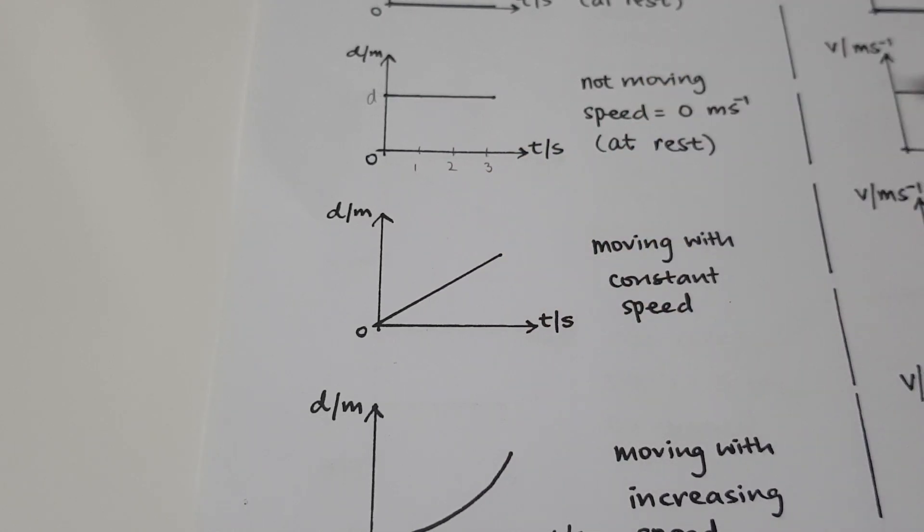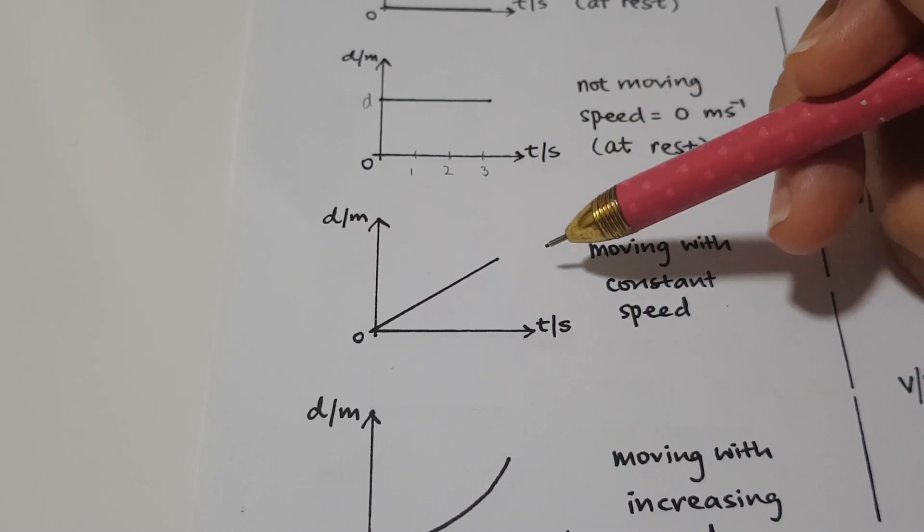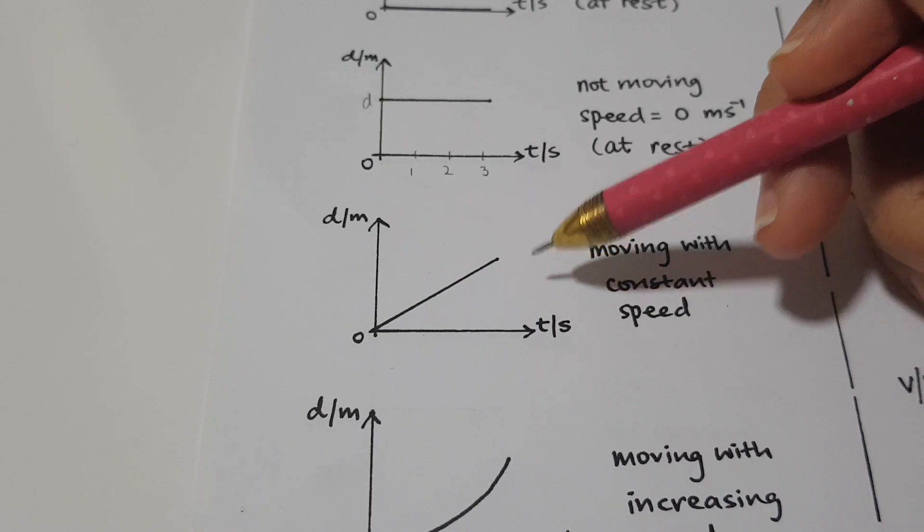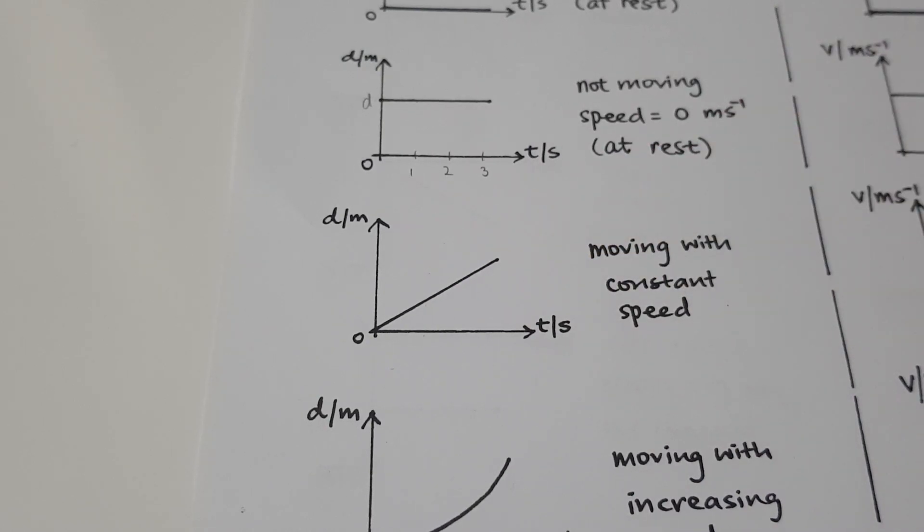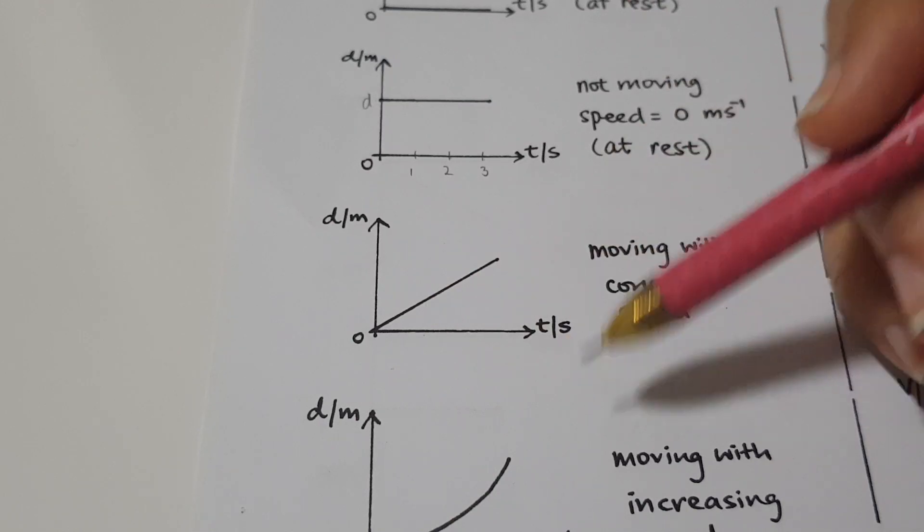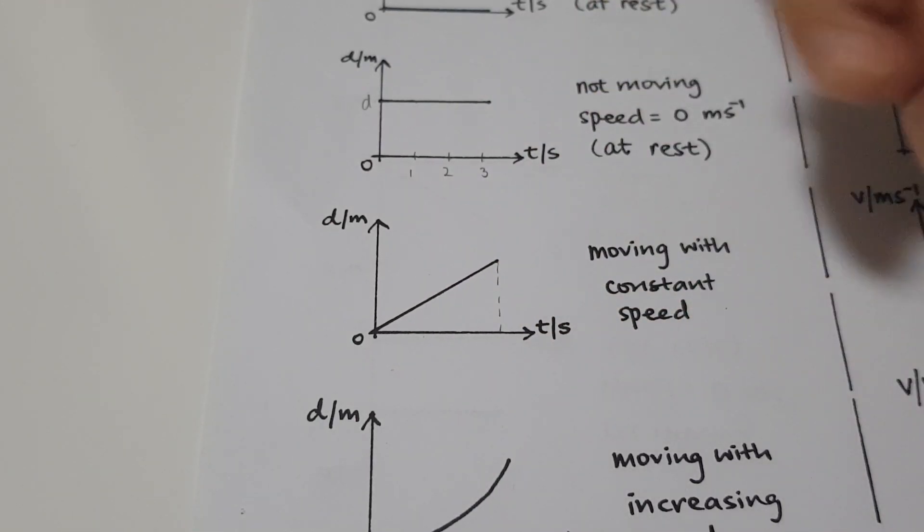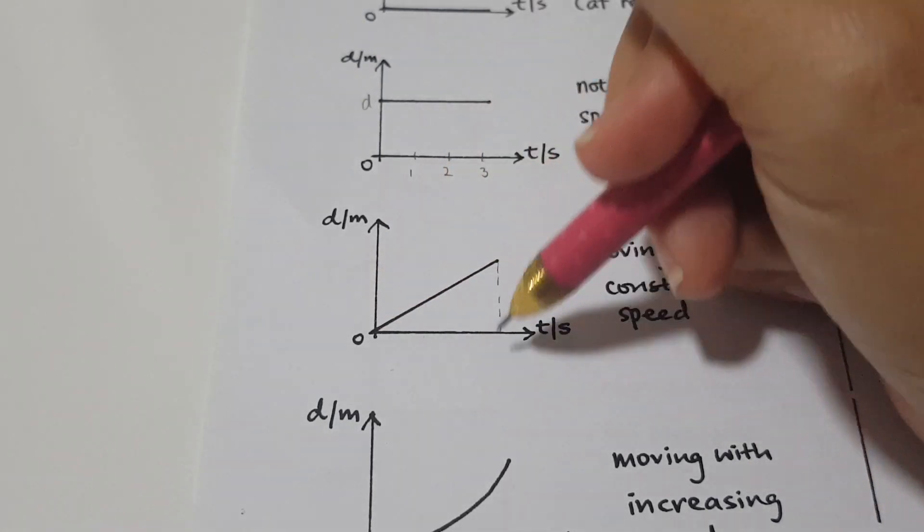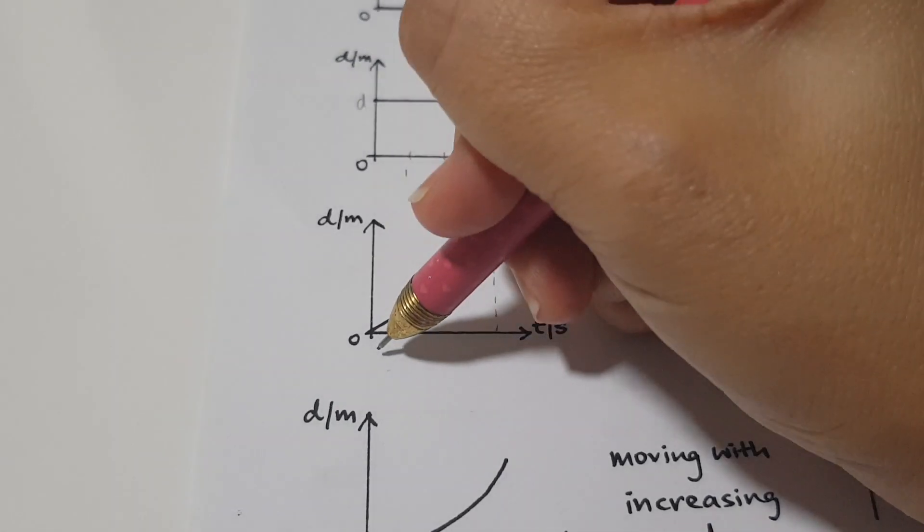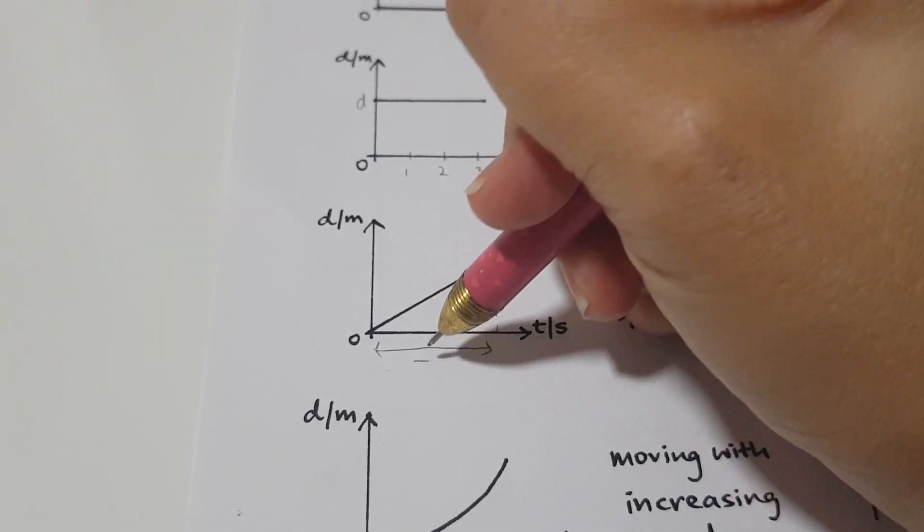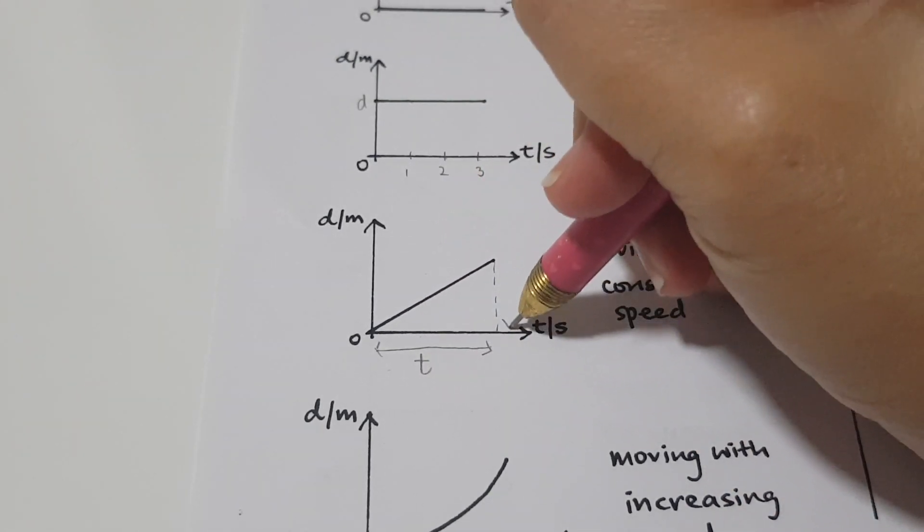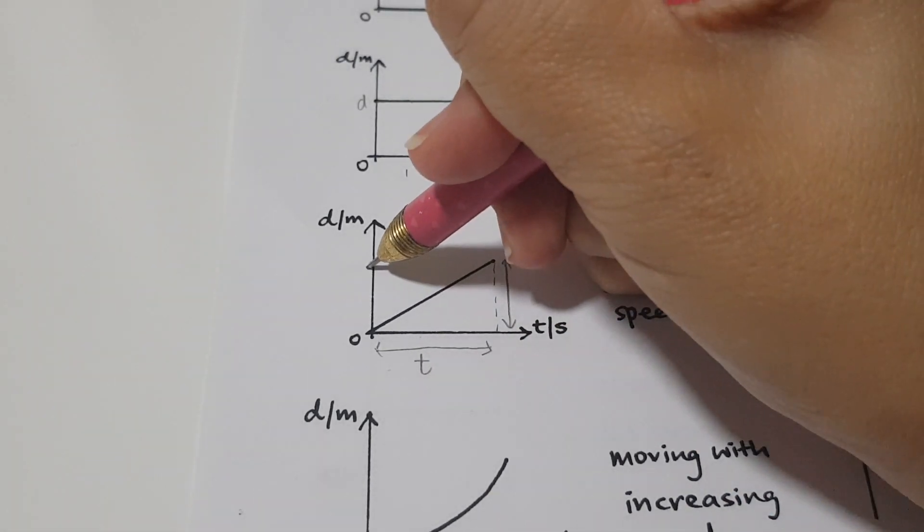And here, how can we find a speed? We can find a speed using the gradient of the graph. Because we all know that speed is the distance over time. And here, if I'm going to find a gradient, for example, I'm going to just use this whole triangle here. So this entire thing, this will be my time taken and this will be the distance.